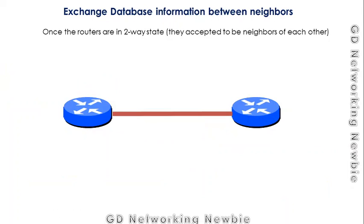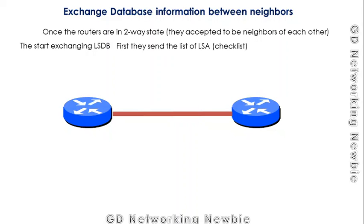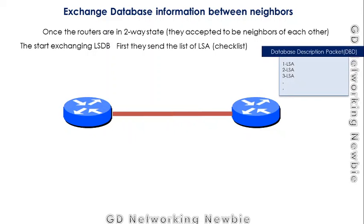Once routers are in the two-way state, they start exchanging the LSDB — the Link State Database. Instead of sending all the data at once, they first send a list of LSAs using a specific packet called the Database Description packet, or DBD. The receiving router reviews this list against its own database.